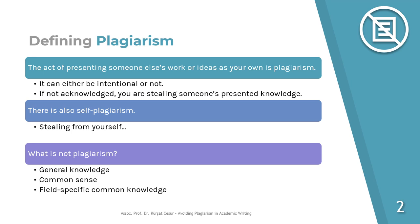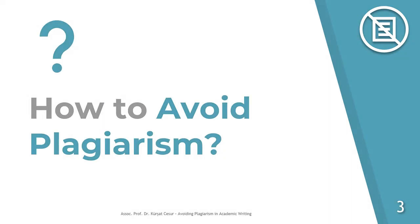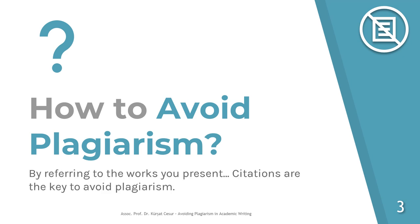What is not plagiarism? These things do not need citations: common knowledge, field-specific common knowledge, and general common knowledge. General knowledge, common sense, and field-specific common knowledge do not require citations — they are not plagiarism. How do we avoid plagiarism? Simply by referring to the ideas and points we take from another resource. In this way, we can avoid all kinds of plagiarism. Use of citations is the way to avoid plagiarism.